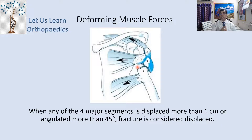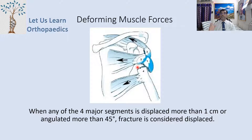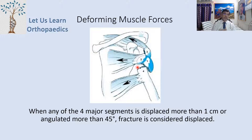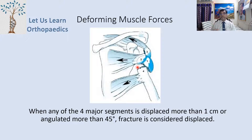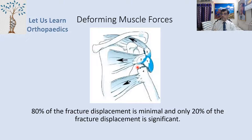When any of the four major segments is displaced more than one centimeter or angulated more than 45 degrees, the fracture is considered displaced. 80% of fracture fragments are minimally displaced and only 20% are displaced.